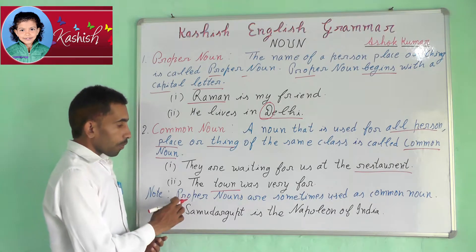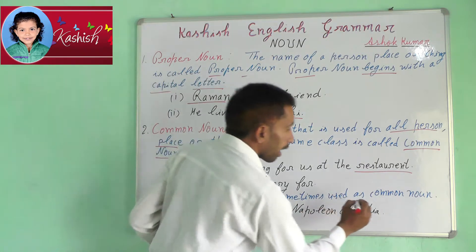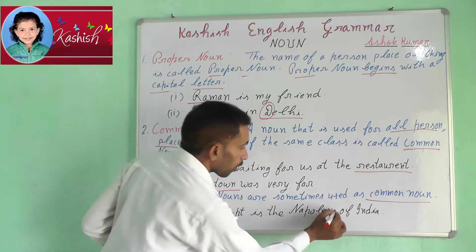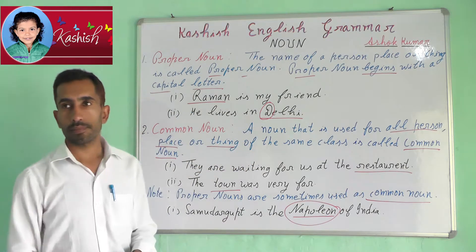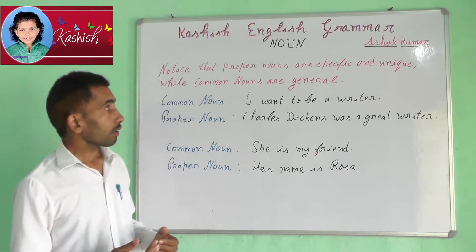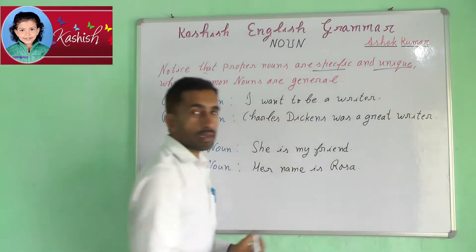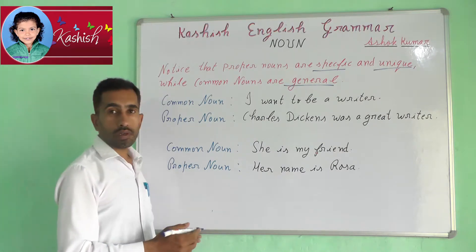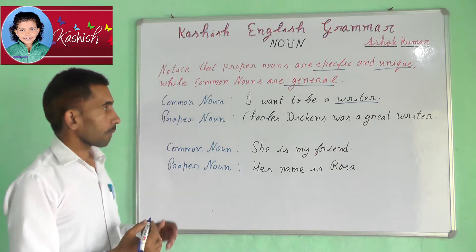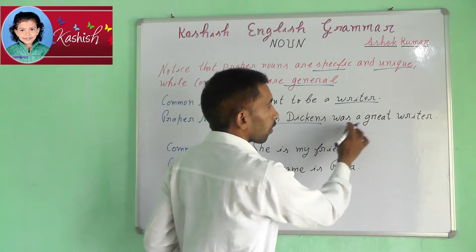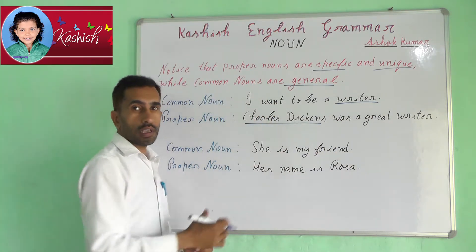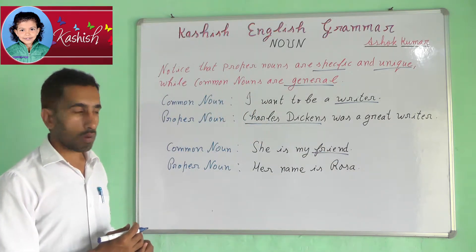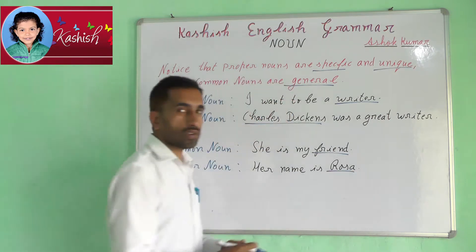Note: Proper Nouns are sometimes used as Common Nouns. For example, Samudragupta is the Napoleon of India. Proper Nouns are specific and unique, while Common Nouns are general. For example, 'I want to be a writer' — writer is a Common Noun. 'Charles Dickens was a great writer' — Charles Dickens is a Proper Noun. 'She is my friend' — friend is a Common Noun. 'Her name is Rosa' — Rosa is a Proper Noun.